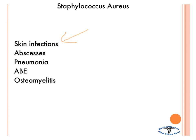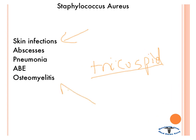Staph aureus also causes acute bacterial endocarditis, especially in IV drug abusers, and therefore you get it on the tricuspid valve. Acute means very severe — it can infect perfectly normal valves — whereas subacute affects previously damaged valves. This is mostly seen in IV drug abusers. Similarly, osteomyelitis is also seen in IV drug abusers: you get a bacteremia and it can deposit in the bone.